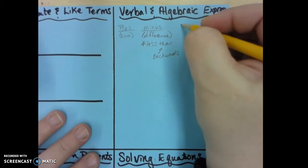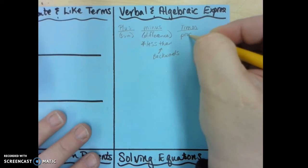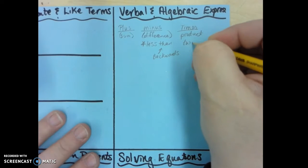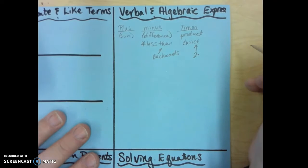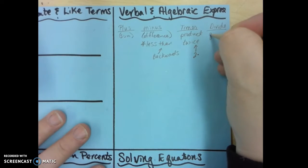And then some other words we have for times is product. Another hard one that people struggle with sometimes is twice, and remember that's just 2 times the number. And then the last one is divide. And for divide, it's quotient and ratio, those are the tricky ones.